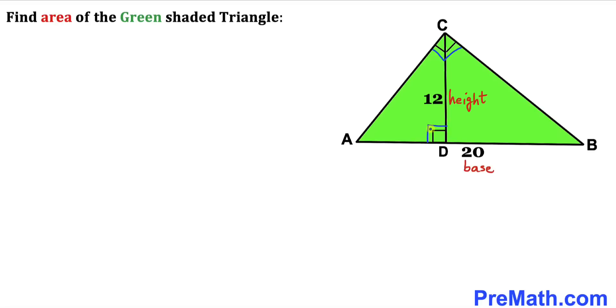We're going to find the area of this green shaded triangle ABC. Please don't forget to give a thumbs up and subscribe. Let's get started with the solution. First, let's recall the area of a triangle formula: area equals one-half times base times height.